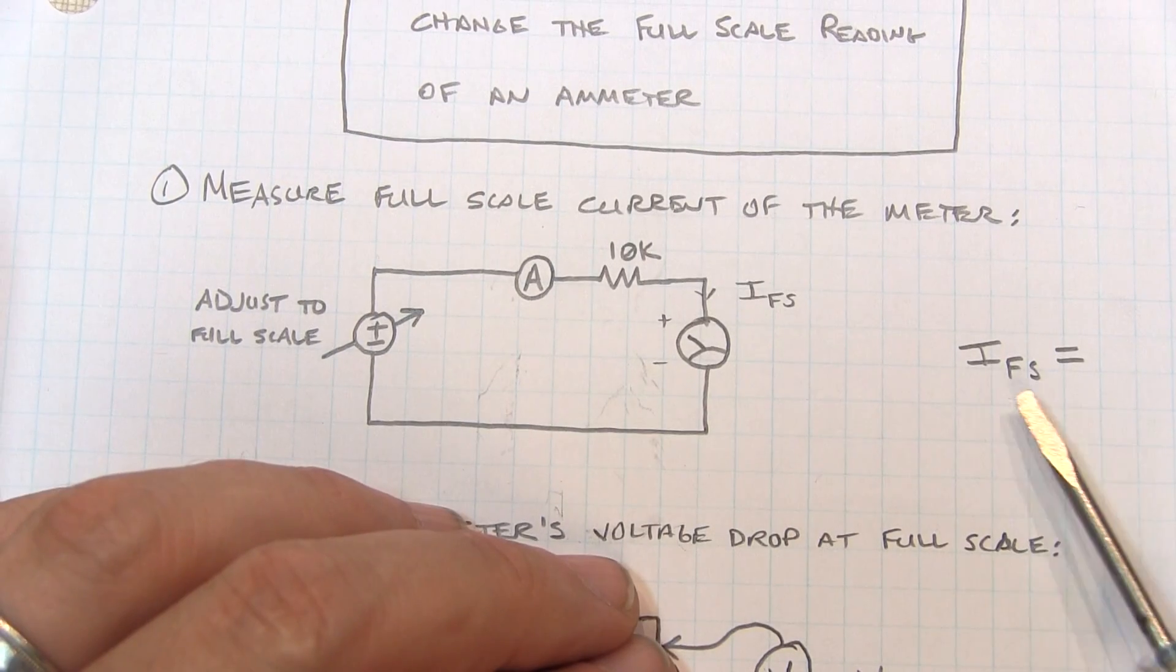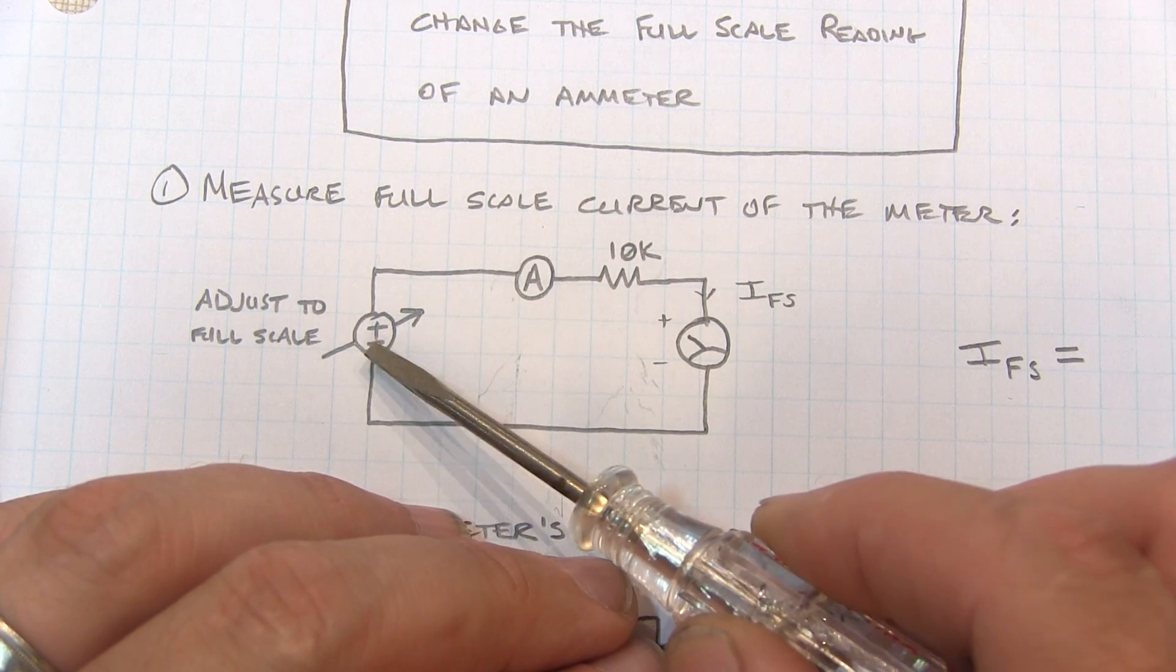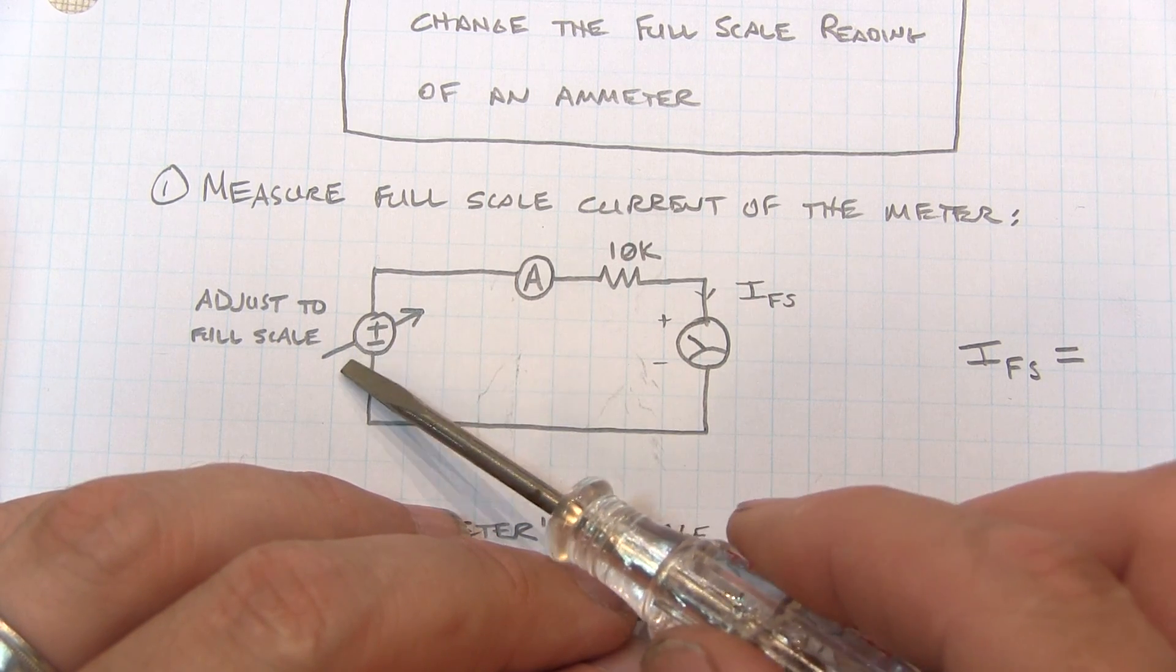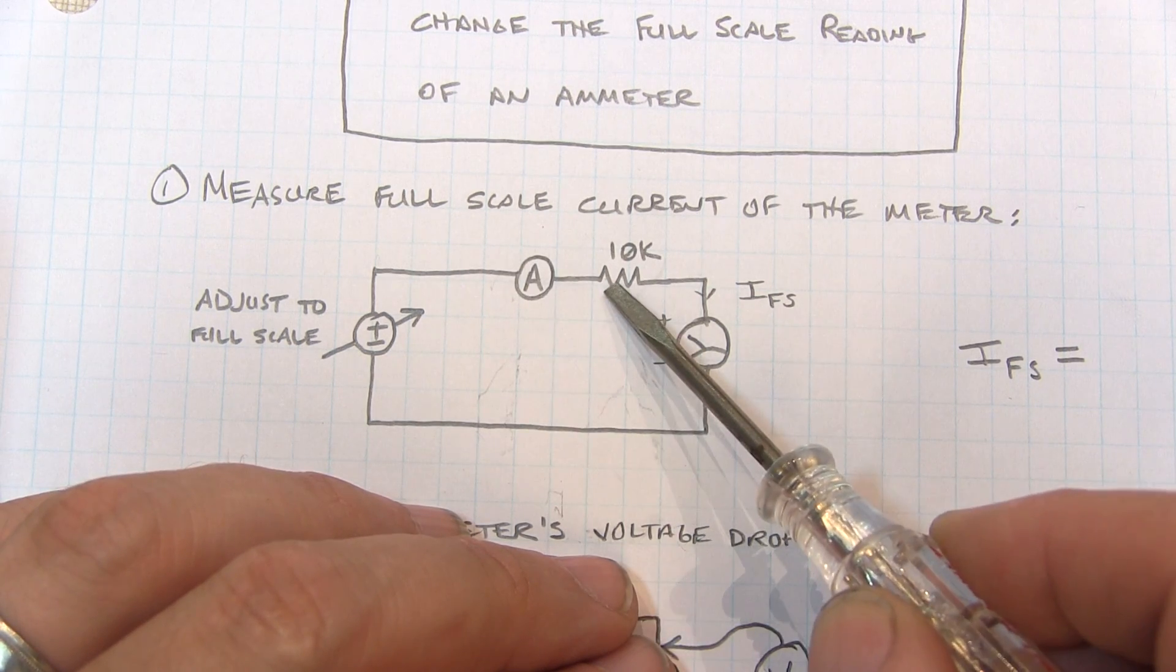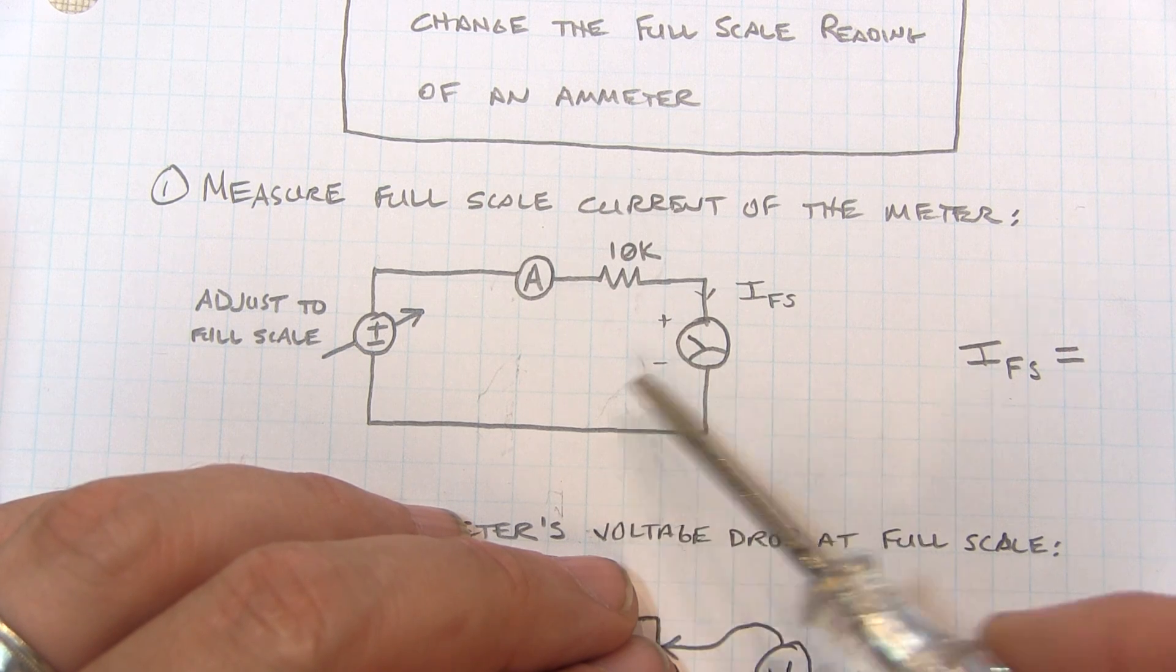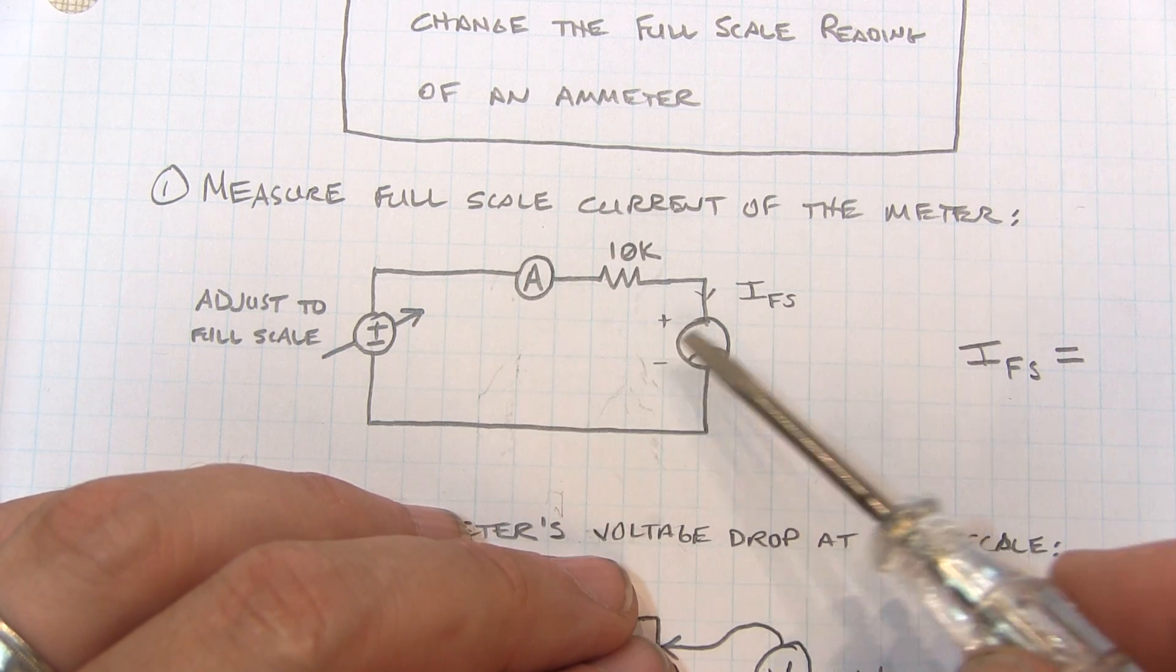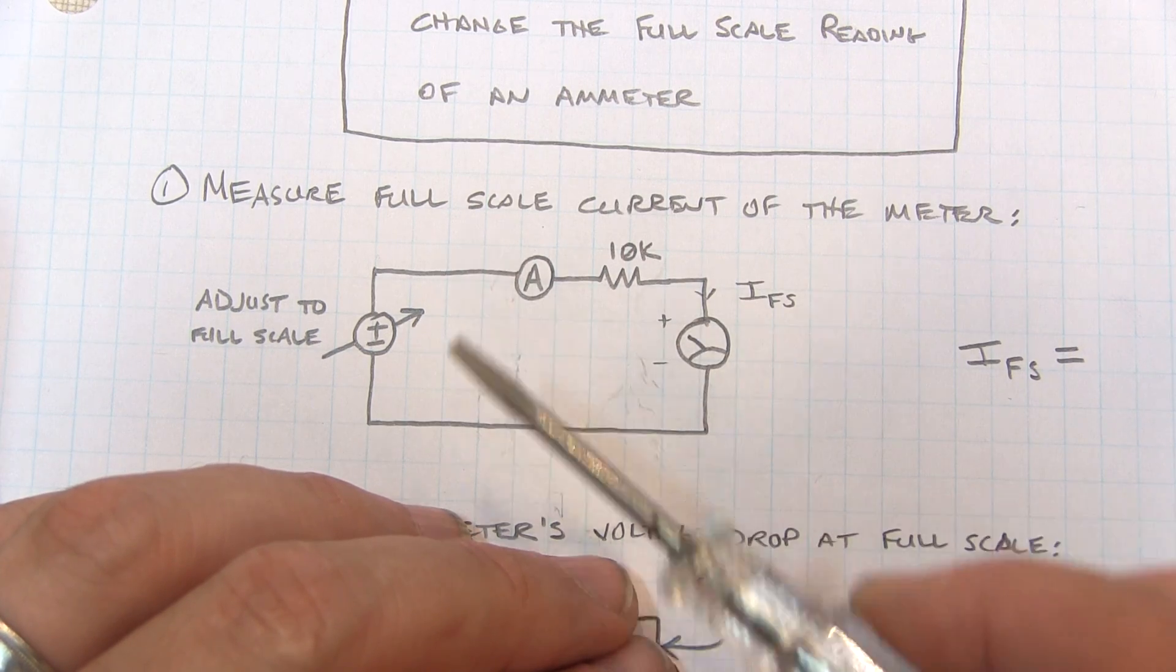So to measure the full scale current like we showed in the last video, you take a variable power supply, typically 0 to 10 or 12 volts would be sufficient, a known good ammeter in series with a 10k resistor in series with the meter that you're testing.